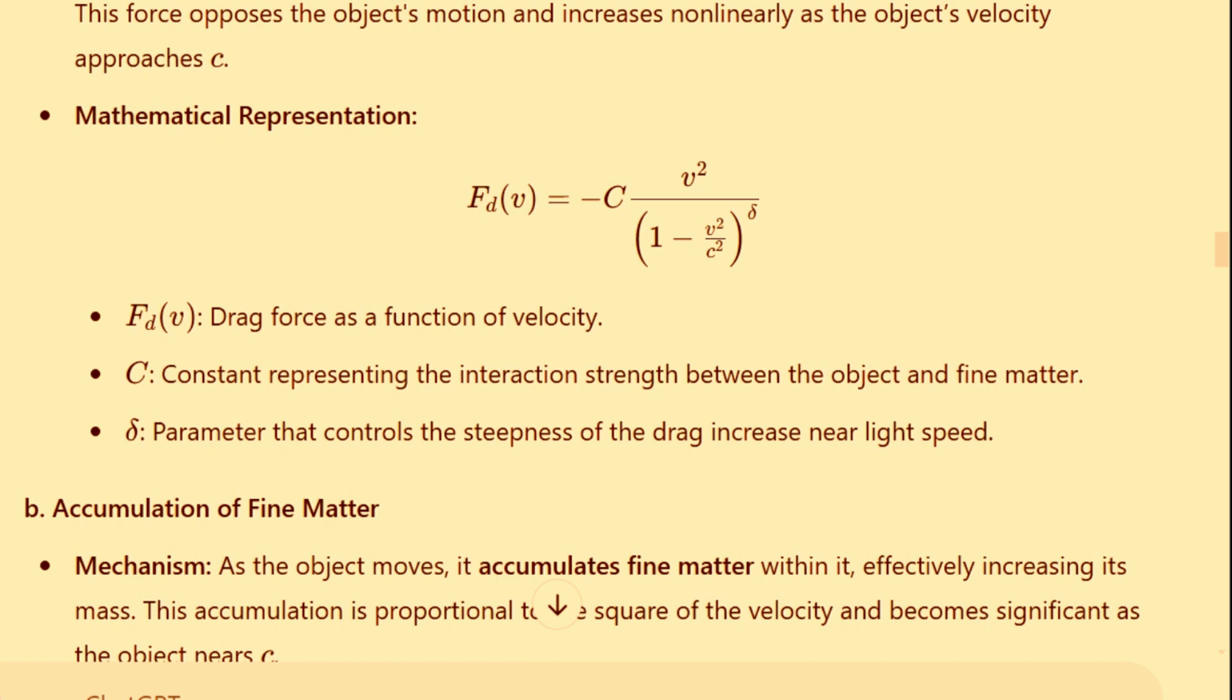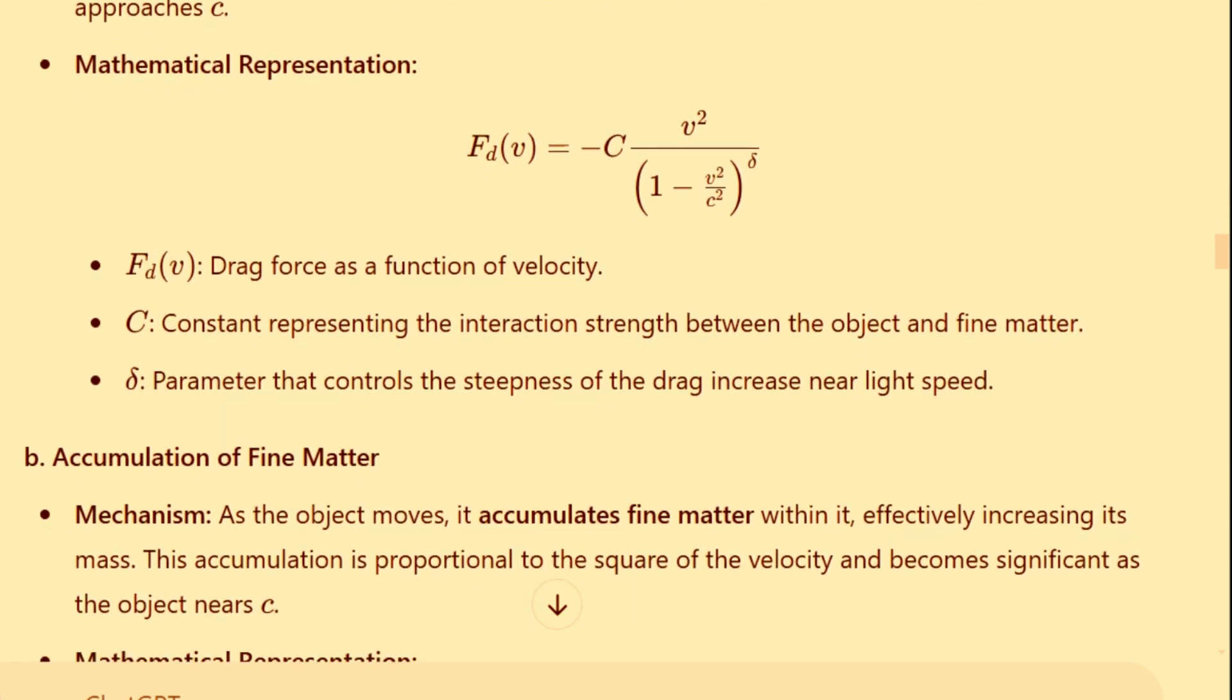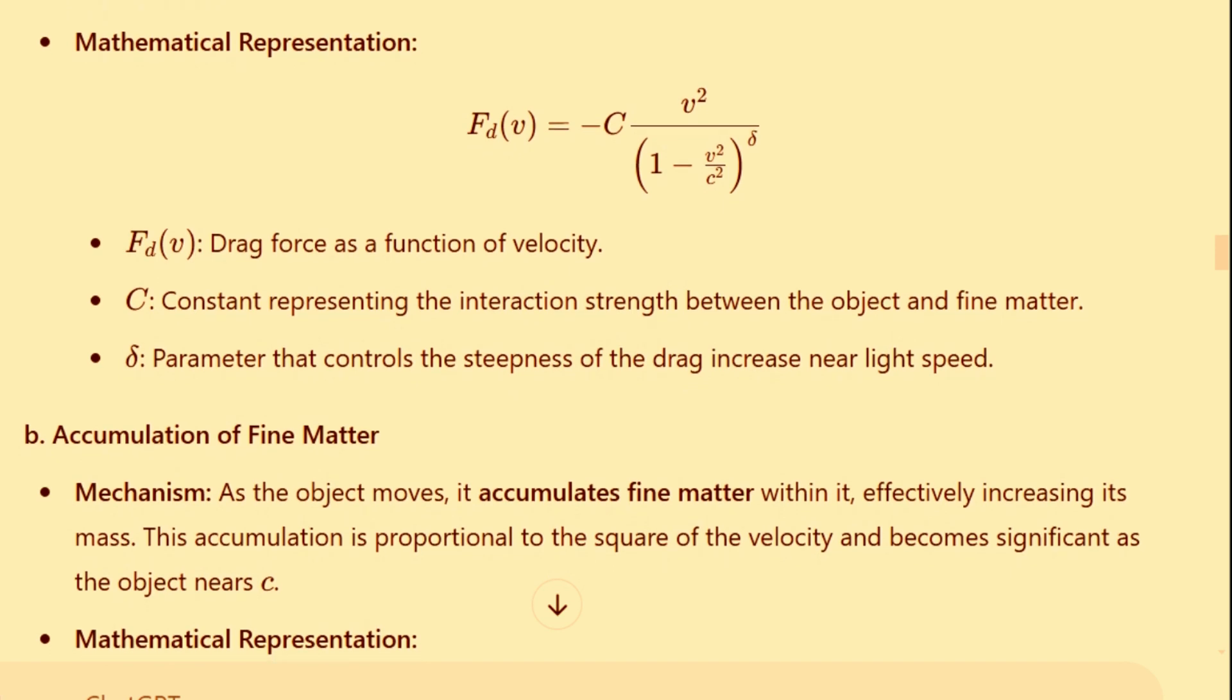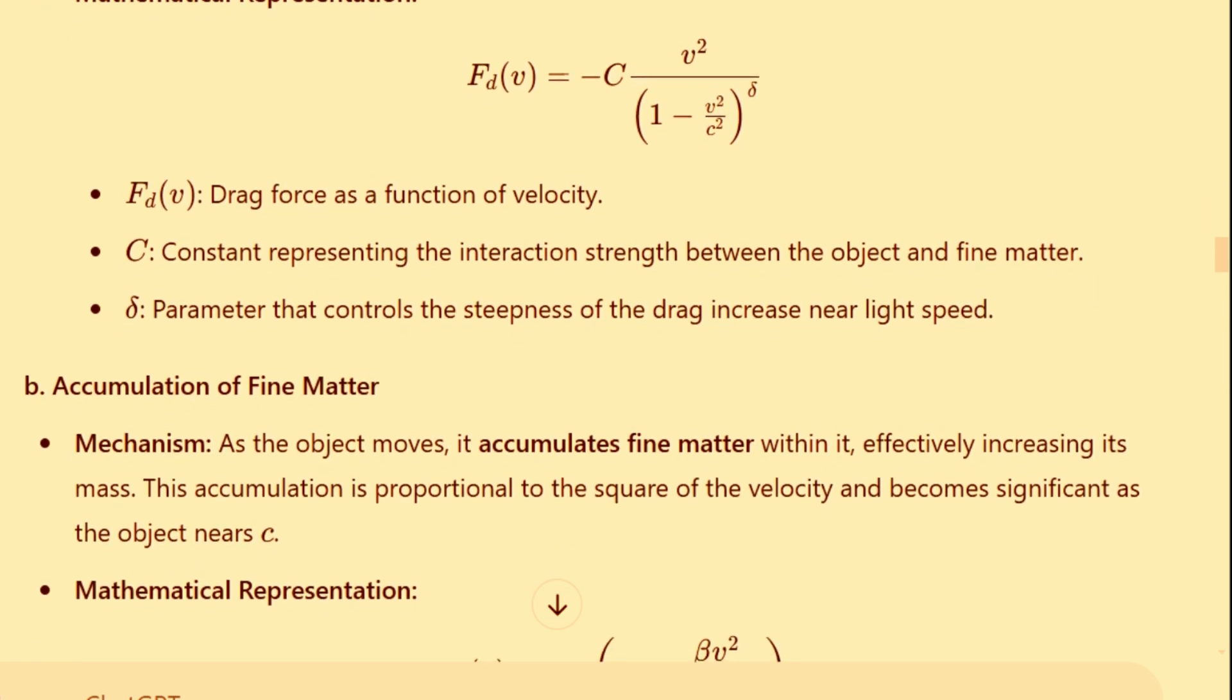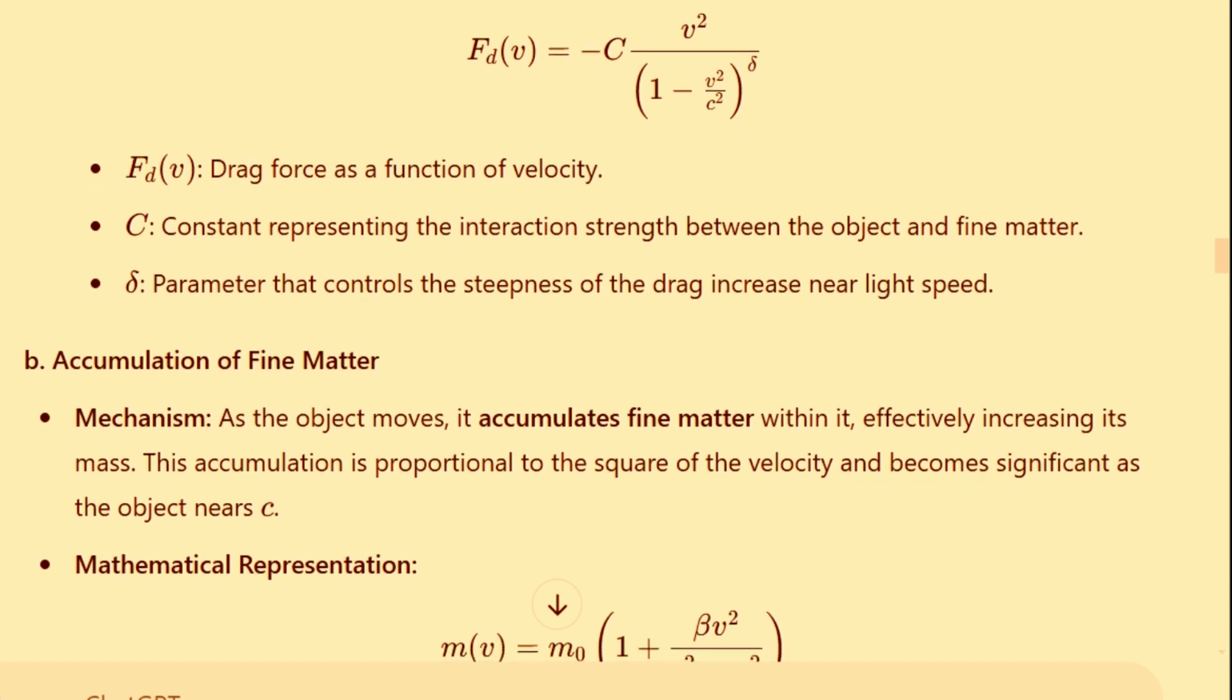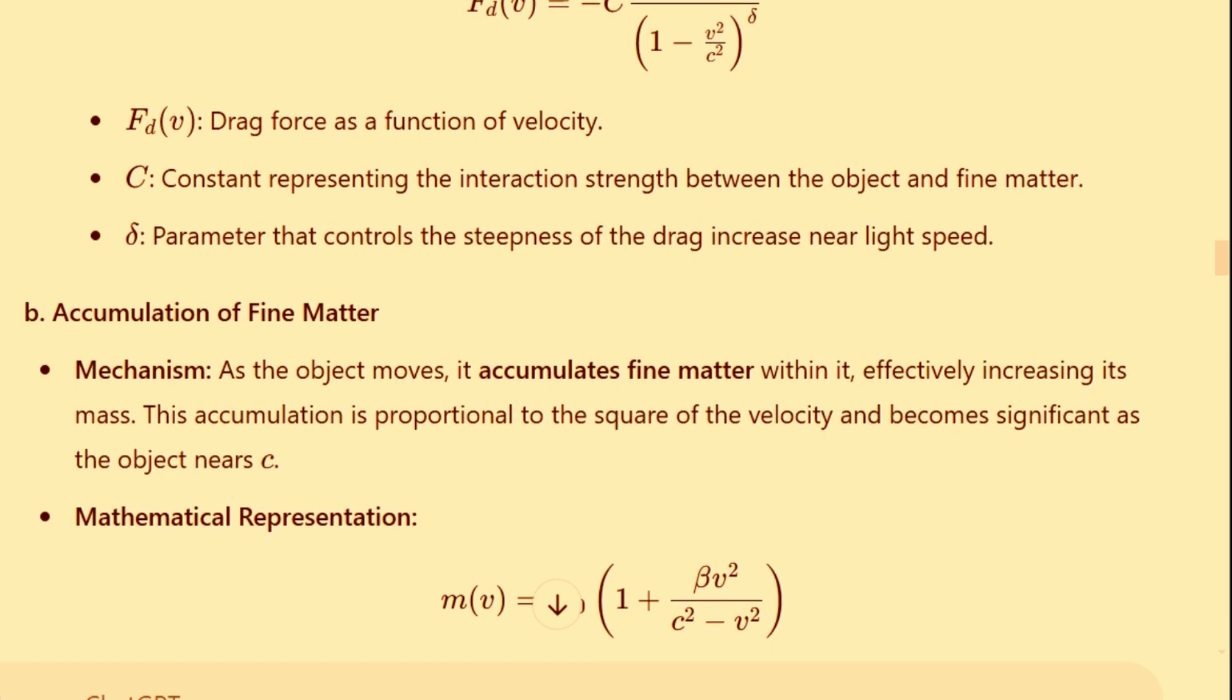Mathematical representation: the drag force, represented by capital F with a subscript d for drag, as a function of velocity, can be described by the following equation. F sub d of v equals negative capital C, multiplied by v squared, divided by the quantity 1 minus the fraction v squared over c squared, raised to the power delta.